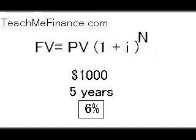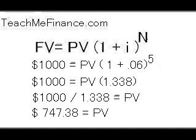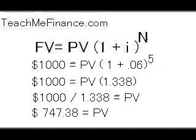With a 6% interest rate, you plug in the numbers: $1,000 equals present value times 1.06 to the power of 5. 1.06 to the power of 5 equals 1.338. Using basic algebra, divide both sides by 1.338, and you get present value equals $1,000 divided by 1.338, which is $747.38. So you give me $747.38 today, and in five years I'll give you $1,000 — either way, you'll be getting 6% interest on your money.